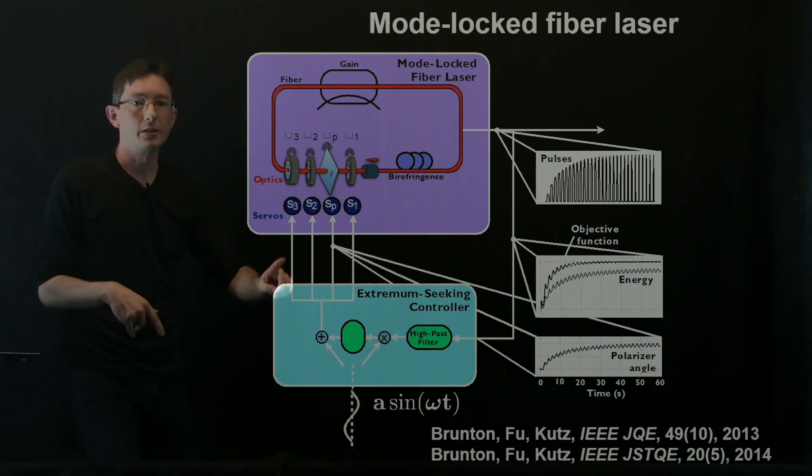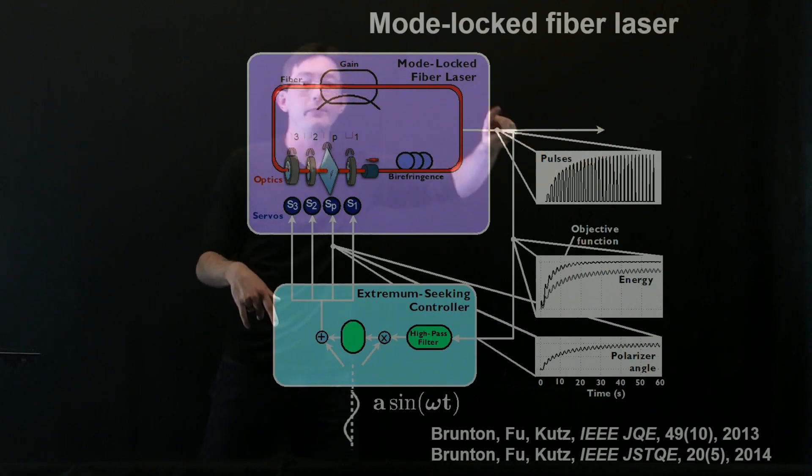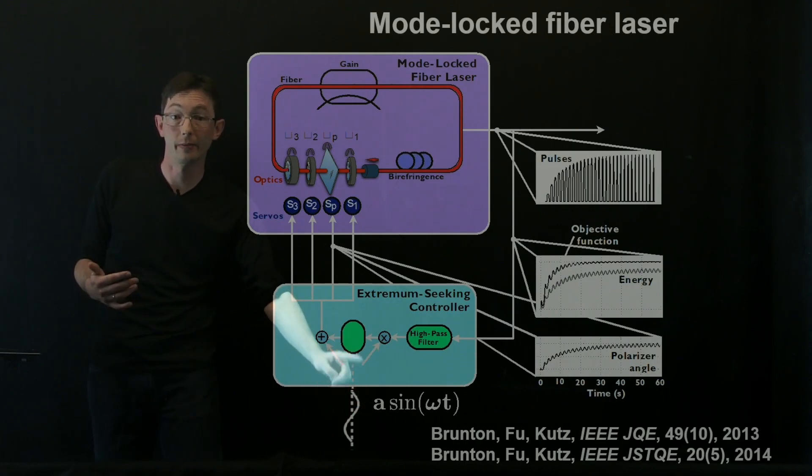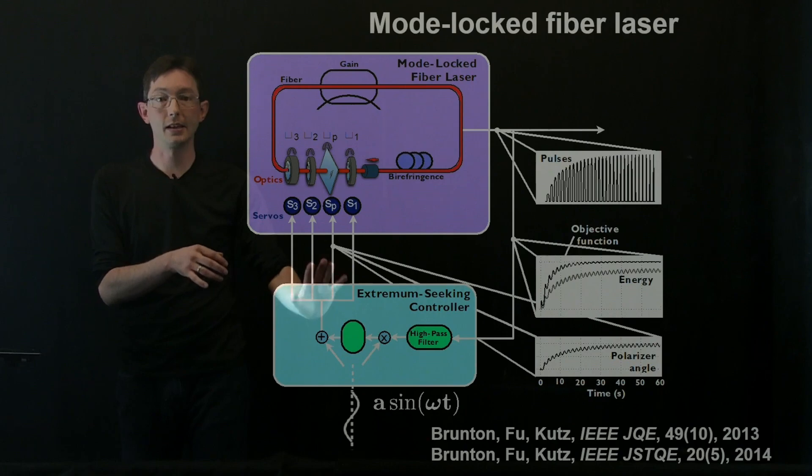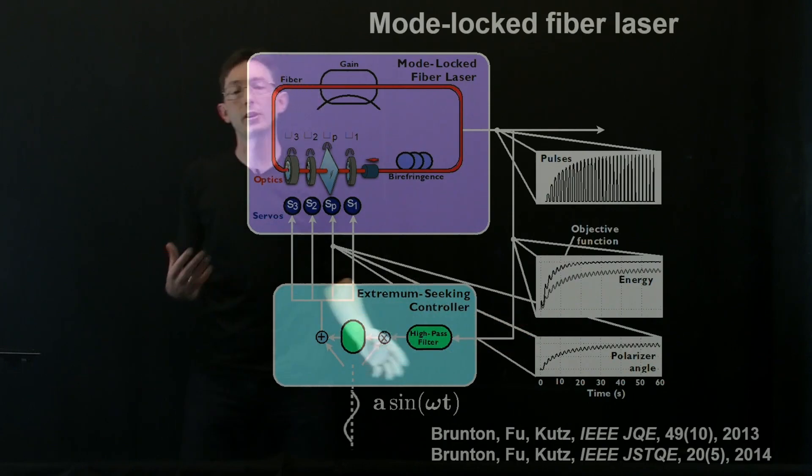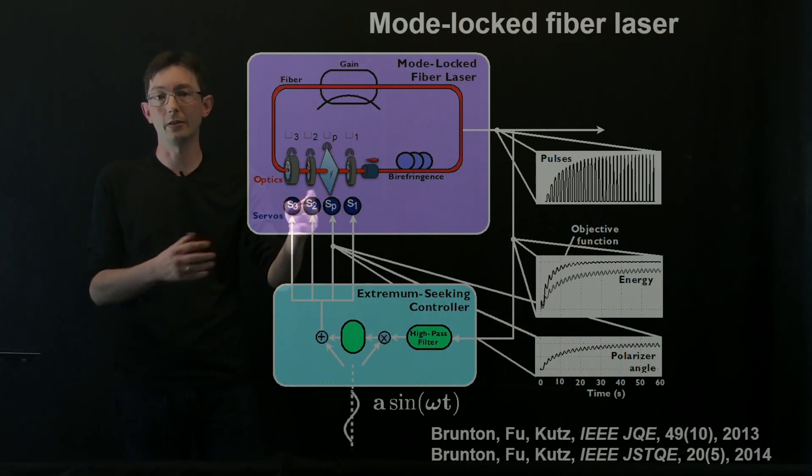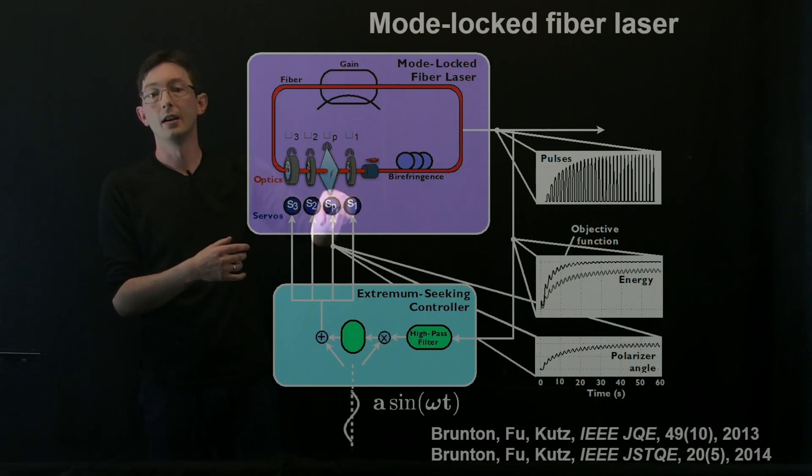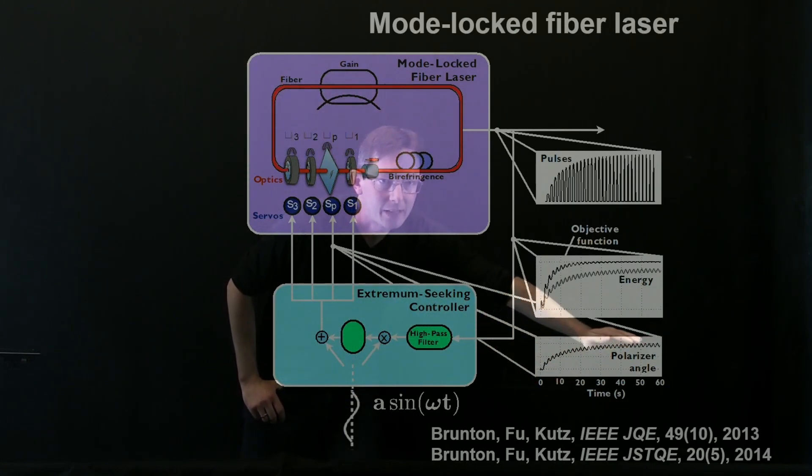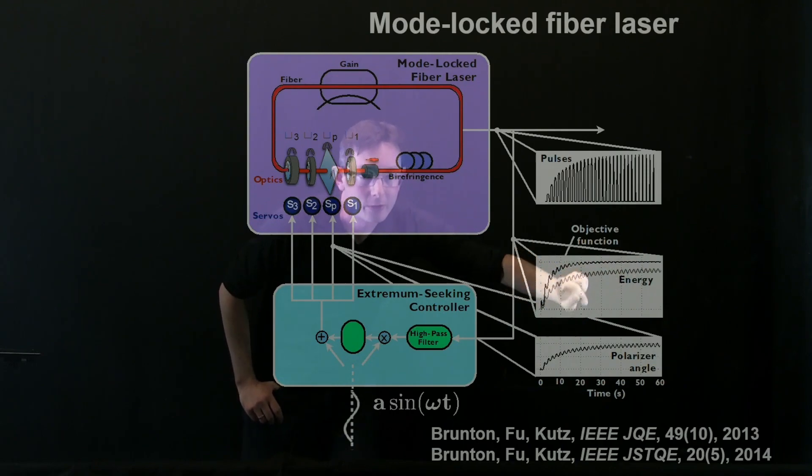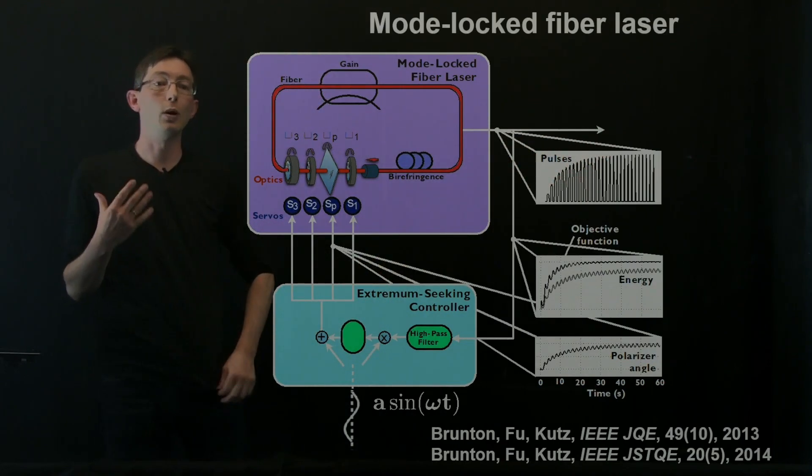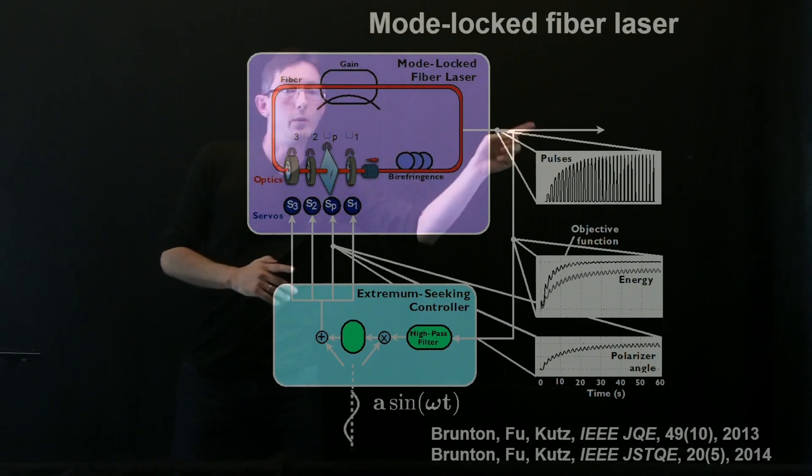And then what we did was we put a little sinusoidal perturbation onto all of these wave plates and polarizers, and we allowed those jiggling measurements, we could measure the output, and we applied the extremum seeking control law to essentially bring the system into mode locking and keep it there even when the birefringence changed in time. And so that's what this looks like here. You essentially can measure your objective function. You feed that objective function back into our extremum seeking controller, which has the sinusoidal perturbation. And then you apply those jiggling signals to some servo motors that actually move these wave plates and polarizers. And so what I'm showing you here is actually just modifying this polarizer angle. You could jiggle all of these servos, but now we're only jiggling this polarizer.